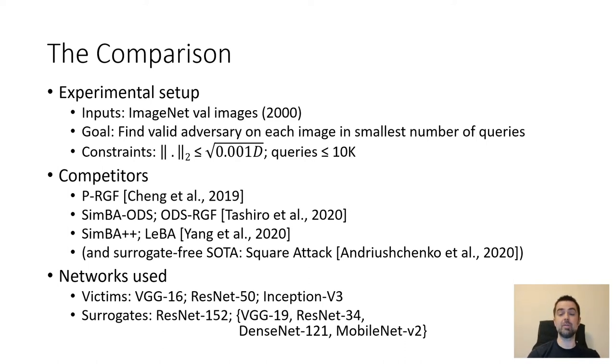In particular, since we're making an argument about similarity and transferability between networks, we've made a point of using the same networks that appeared across those papers rather than picking our own. So the three target networks are these and the two choices of surrogates are this one or this set of four which get used together as a group, which gives us six different ways of pairing targets with surrogates.